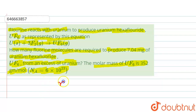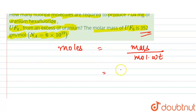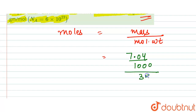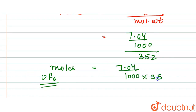First, we find the moles of UF₆. Moles equals mass divided by molecular weight. The molecular weight is 352 and the mass is 7.04 milligrams, so we convert to grams: 7.04 divided by 1000, then divided by 352. This gives us 2×10⁻⁵ moles of UF₆.